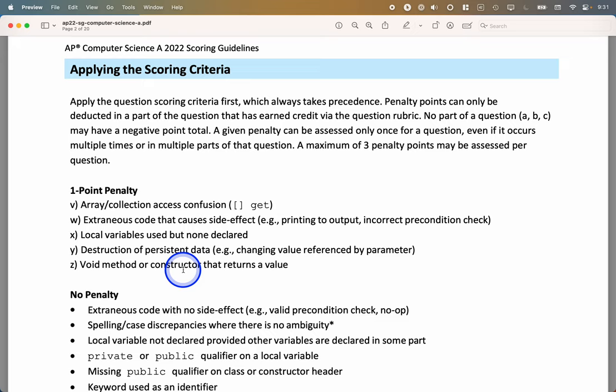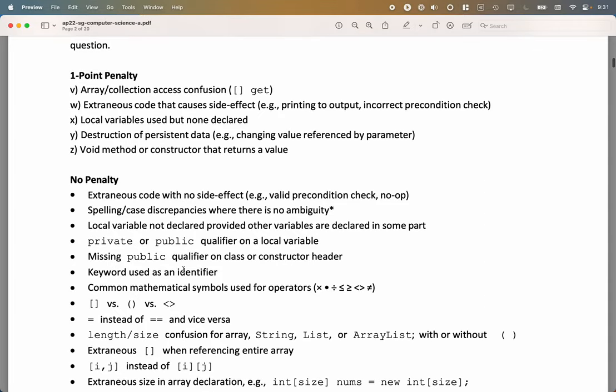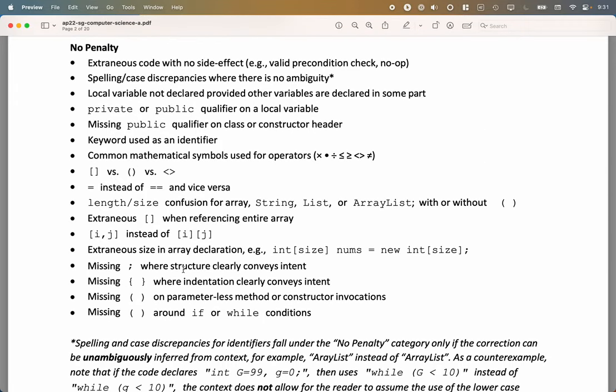So that's the stuff to be aware of, the not so good news. Here's the good news. These are all things that you may do in your FRQ answers that do not receive a penalty. If you write extra code and it doesn't have a side effect, maybe you write code to check the preconditions, even though you shouldn't waste time to do that, you're not going to be penalized. Spelling case discrepancies, you got to be a little careful of this one. If you misspell something or if you don't have the right case and it's absolutely clear that it cannot be interpreted any other way, you won't be penalized.